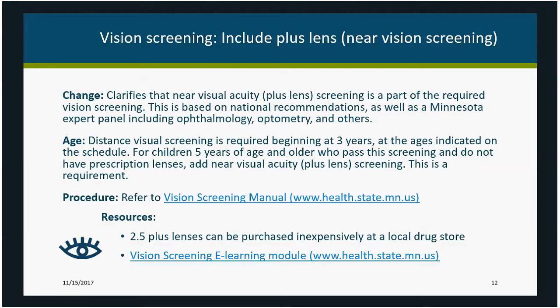A separate note about instrument-based screening: the current recommendation is that these instruments can be used for children who are unable or unwilling to cooperate with routine visual acuity screening using the 10-foot wall chart. The wall charts are still the gold standard. Photo screening and handheld auto refraction may be used as an alternative for kids that are 3 to 5 years of age. However, instrument-based vision screening is not recommended for children older than 6 years of age who can be screened using the traditional visual acuity charts.